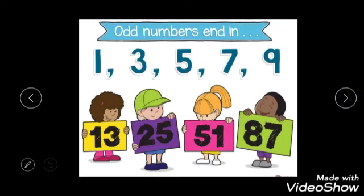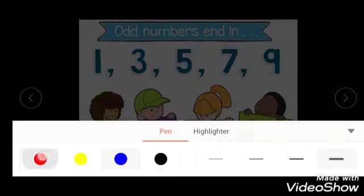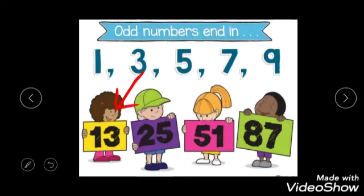Like in 13. What is at the end? 3. So does it come in the 2's table? No. So 13 is an odd number. 25. 5. Does 5 come in the 2's table? No. So 25 is an odd number.